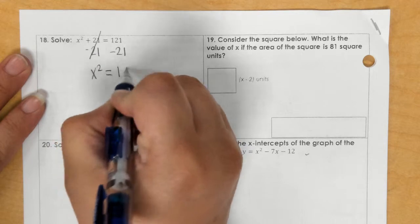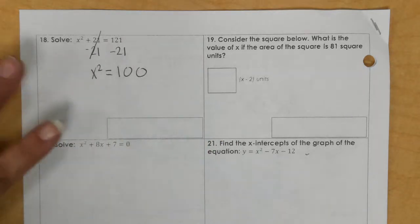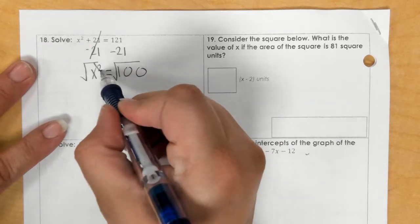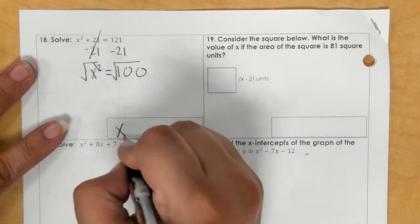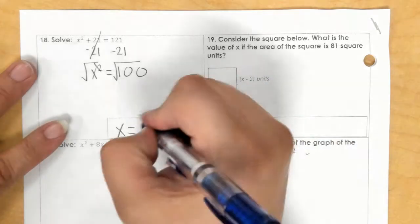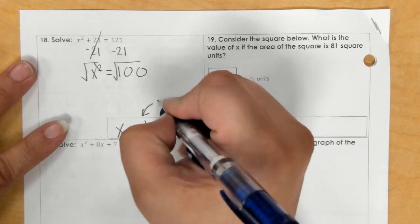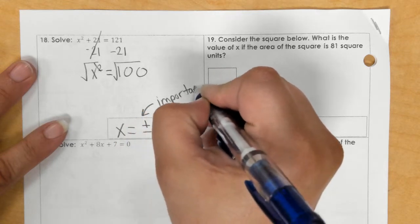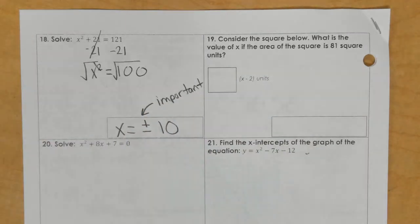x squared equals 100. Then I would square root, and I get that x equals plus or minus 10. That right there is important that you put plus or minus on your answer because you're talking about an equation.